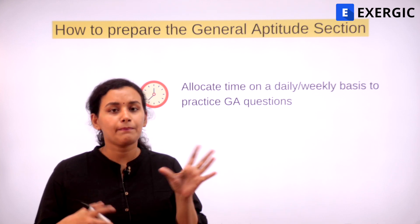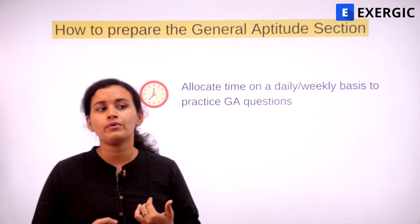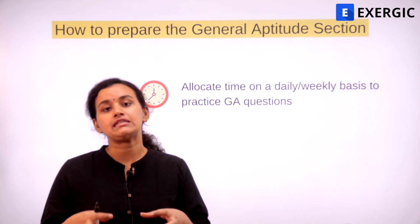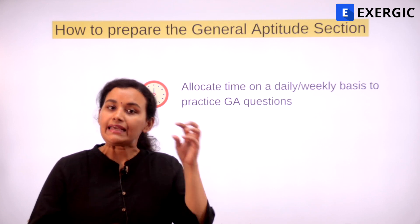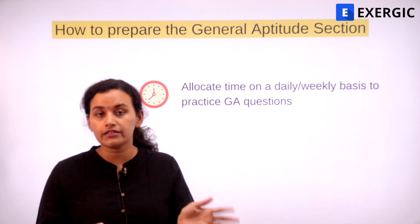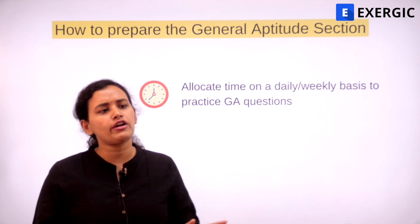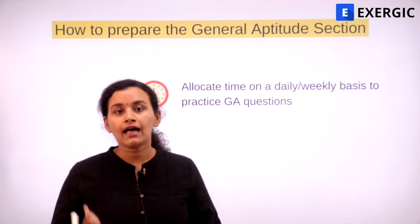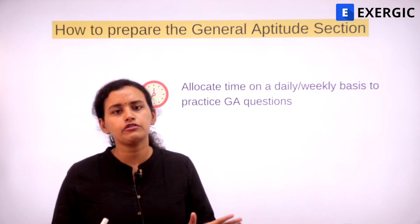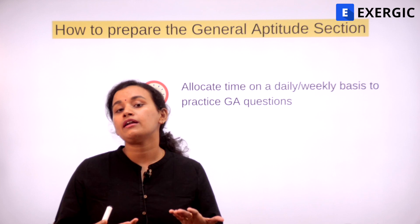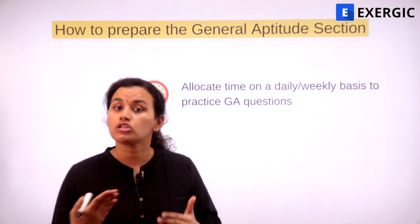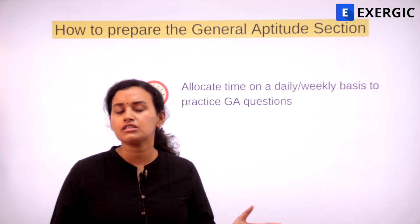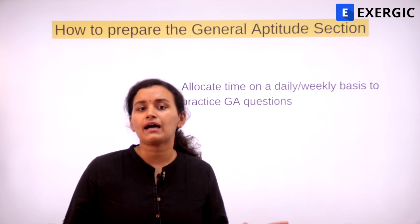The time you allocate can depend on factors like whether you are in college, a full-time aspirant, or preparing alongside a job. But you need to fix a time on a daily or weekly basis with a clear objective. If you have a full-time job or are in your final year, allocate around half an hour every day or three to four hours weekly. If you are a full-time aspirant or in your third year, you can give 45 minutes to one hour every day.